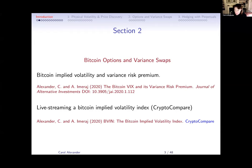Then I'll move on to options. The options markets in crypto have only really been acting like a mature options market over the last year. Variance swaps have been traded on-chain — the equivalent of over-the-counter — for about two years. I'll be talking about a theoretical fair value: the variance equivalent of the VIX, a Bitcoin VIX. This is work with Armin Imarai, available from the Journal of Alternative Investments. We couldn't call it the Bitcoin VIX — CBOE don't like that — so we've called it BVIN.